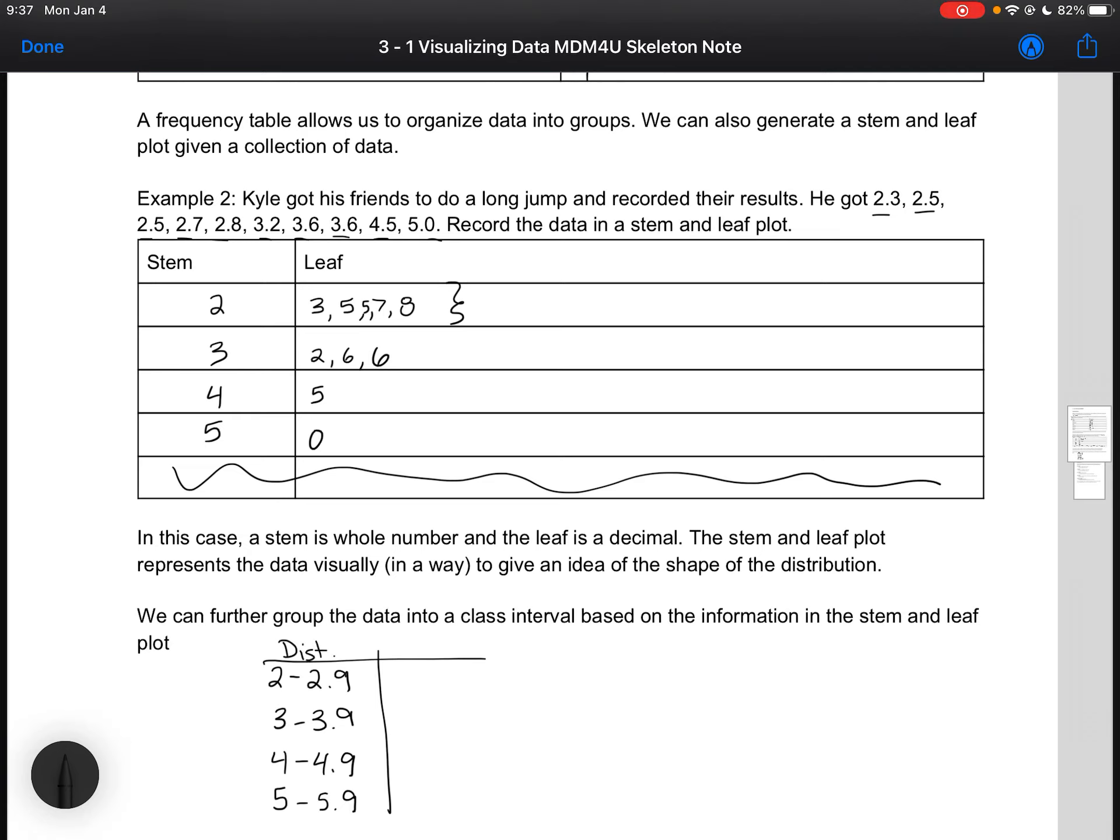So here I could organize it like this, and then I would have—so this would be my distance and my frequency. And then I would just count the values that I have for my stem, so I have 1, 2, 3, 4, 5 for 2, and then I've got 3 for 3, 1 for 4, and then 1 for 5.